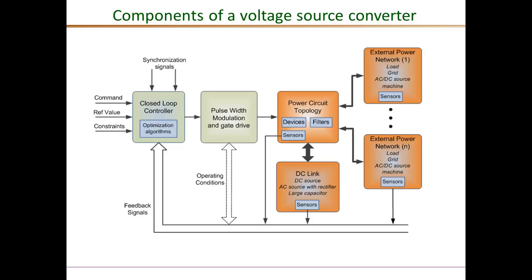The block diagram shows the main components of a voltage source converter. Any power converter is really a closed loop feedback control system. Therefore, the closed loop controller is a key critical part of the VSC. Then we have the pulse width modulator and the gate drive powering the various switches in the power circuit topology. Voltage source converters are characterized by having a voltage DC link and they can interface multiple external power systems. In the next few slides, we look at each of these components in a little bit more detail.